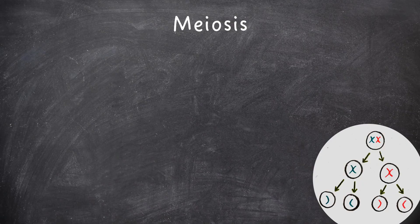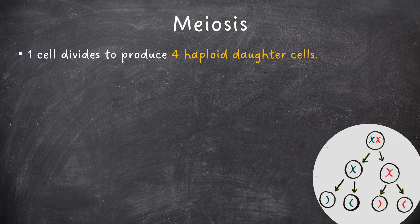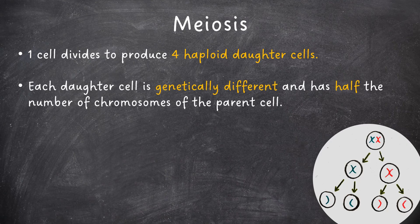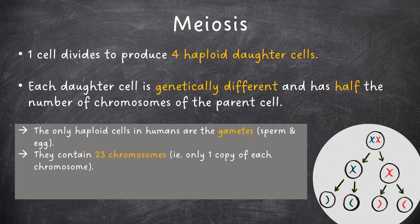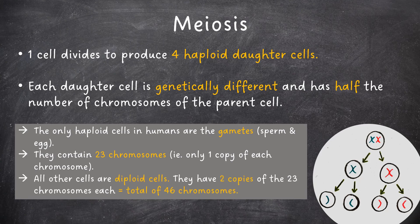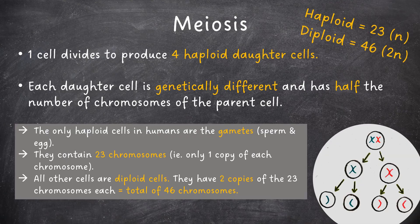Next we need to cover meiosis. In meiosis, one cell divides to produce four haploid daughter cells. Each daughter cell is genetically different and has half the number of chromosomes of the parent cell. Note that the only haploid cells in humans are the gametes, which are the sperm and the egg. They contain 23 chromosomes, i.e. only one copy of each chromosome. All the other cells are diploid cells, with two copies of the 23 chromosomes each, meaning a total of 46 chromosomes.